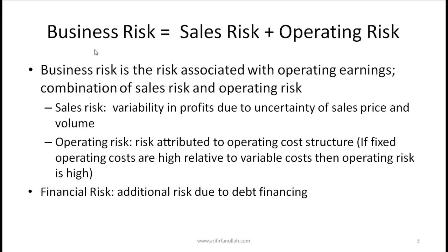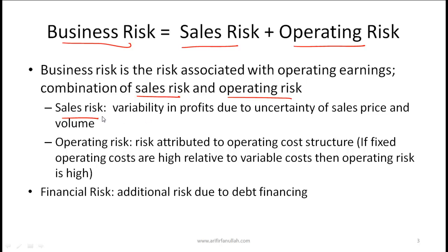A few basic concepts of risk. Business risk for a given entity consists of sales risk and operating risk — it's the risk associated with operating earnings. Sales risk refers to variability in profits due to uncertainty of sales price and volume. Operating risk is the risk attributed to the operating cost structure; if fixed operating costs are high relative to variable costs, then the operating risk is high.